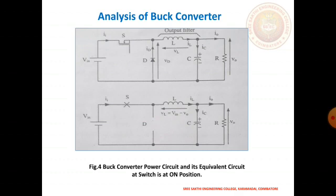When the transistor switch S is closed, diode D1 becomes reverse biased and the input voltage V_in causes current to flow through the inductor to the connected load at the output. The capacitor charges as the charging current flows through the inductor coil. This continues as long as switch TR1 remains closed. This is the first operating mode.